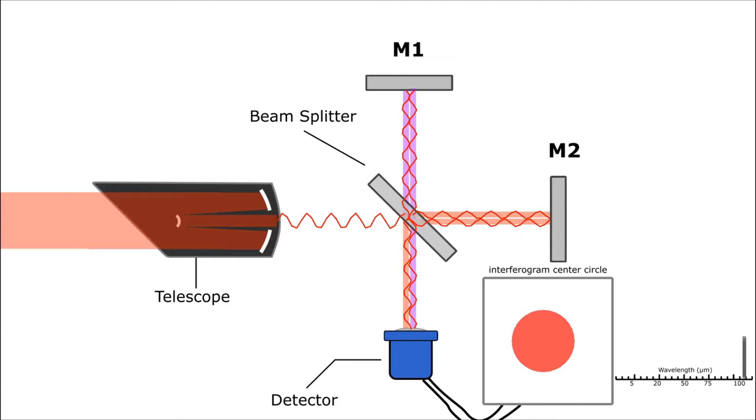One of the mirrors is moved ever so slightly but enough to make the difference in distance match a different wavelength in the infrared spectrum. Interference happens and intensity of the pattern is once again recorded. Over time a region of the infrared spectrum is scanned for radiation coming from the planet.